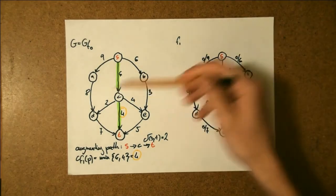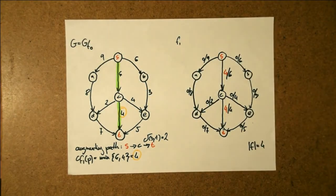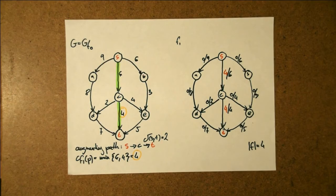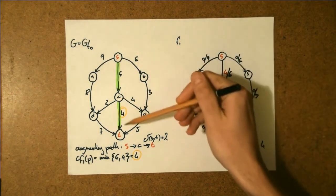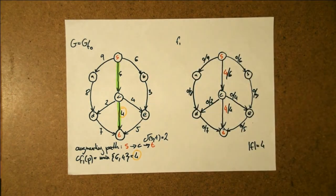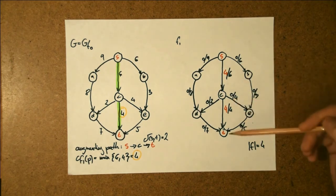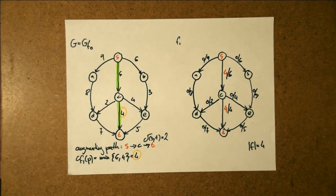So, we start off with a flow network G, and since initially the value of the flow on it equals zero, we can think of it as the residual of this flow denoted F0. The shortest augmenting path on it is SCT of residual capacity 4 defined by CT, which is of minimal capacity. We use this to augment the flow and we add 4 to the flows on SC and CT. The value of the flow now equals 4.